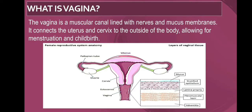Now we can see the layers of the vagina. The first layer includes mucus, then stratified epithelium, lamina propria, fibromuscular layer, and adventitia.